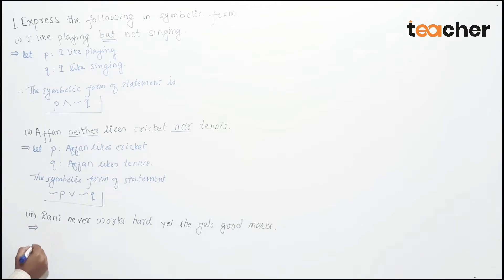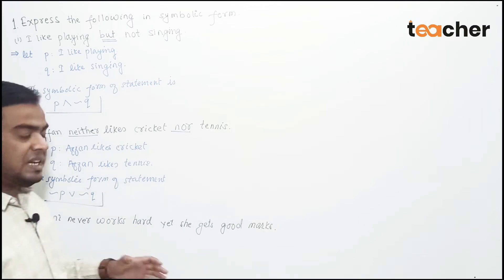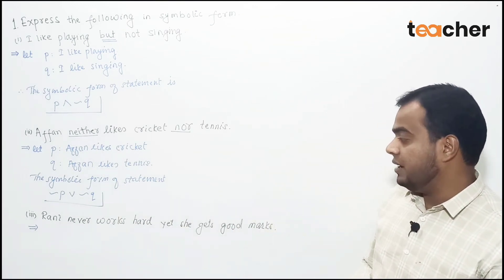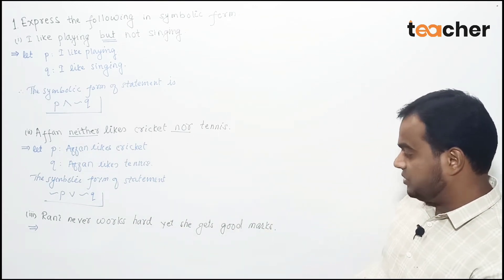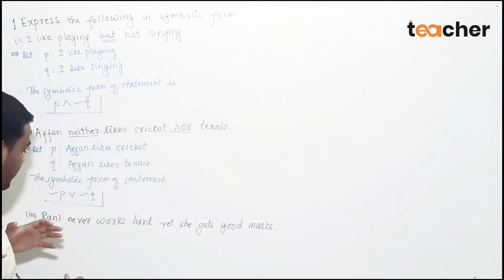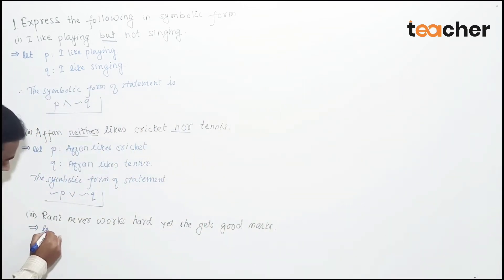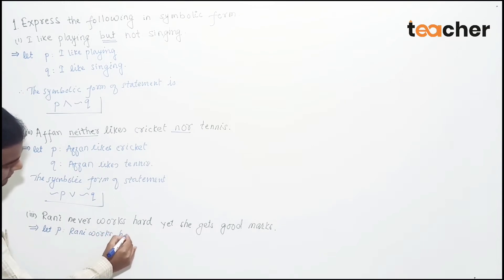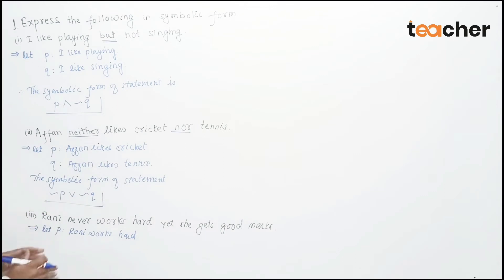The third example: 'Rani never works hard yet she gets good marks.' Here the first part is negative — 'never works hard' — and the second part is positive — 'she gets good marks.' Let P represent 'Rani works hard.' Since 'never' implies negation, the first part becomes negation of P.